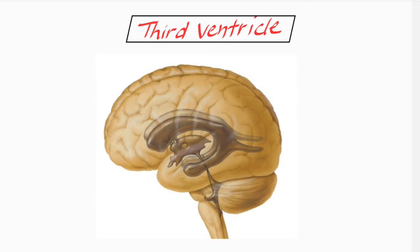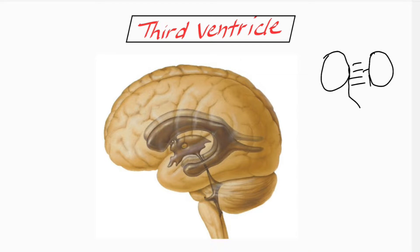Hello students, today we are going to learn about the third ventricle. Ventricle means cavity, so the third ventricle is a cavity in the brain located in the diencephalon. It lies between the two thalami — one thalamus on each side — and the cavity in between is known as the third ventricle.